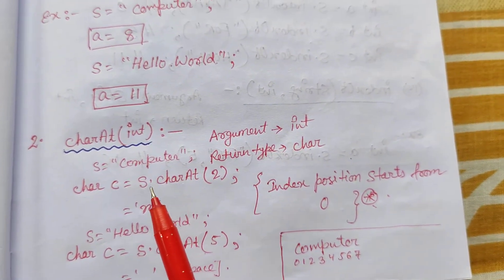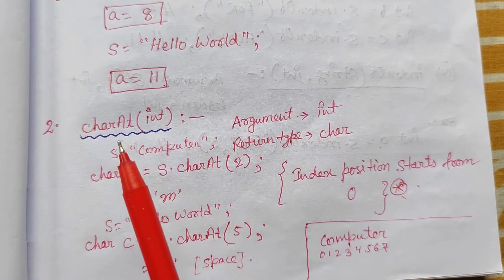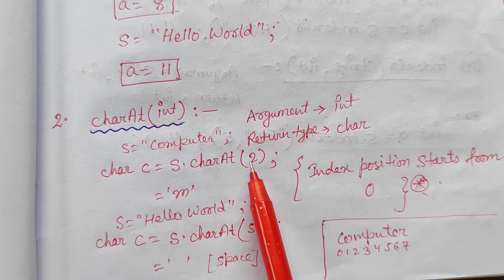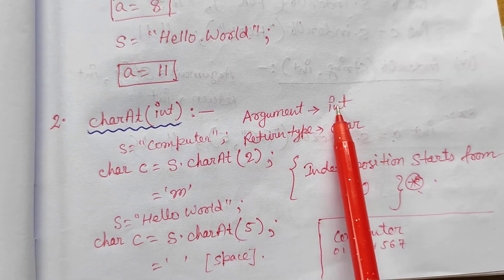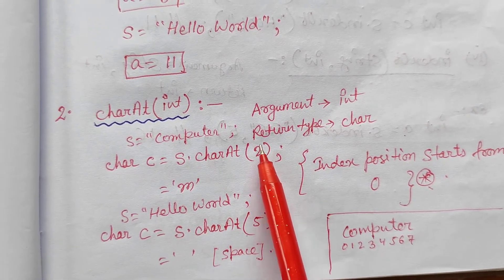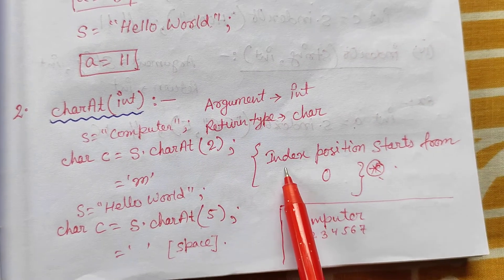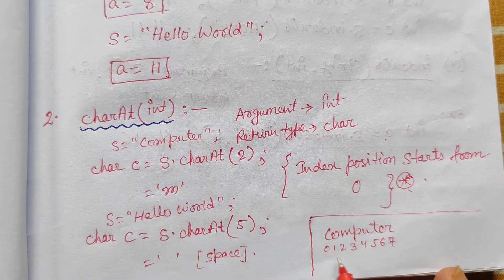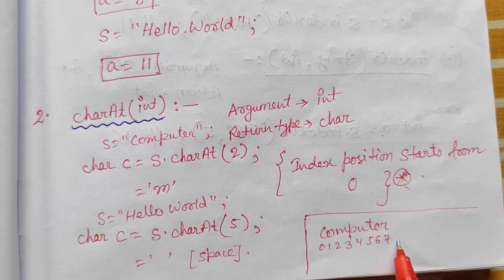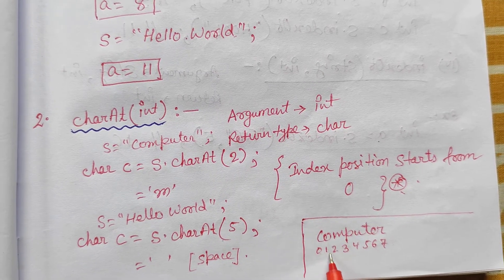Next is charAt(). In Scanner class we have done this charAt() function. It is used to get the particular character from a particular index position. Argument will be int type, return type will be char. So we write: char c = s.charAt(someInteger). Suppose string s = "computer". charAt(2) means the second index position. Index starts from 0, so: 0-1-2-3-4-5-6-7, length is 8. So charAt(2) returns 'm', which is at position 2.